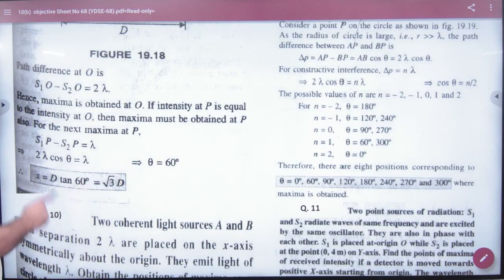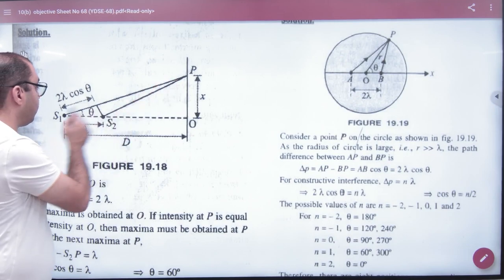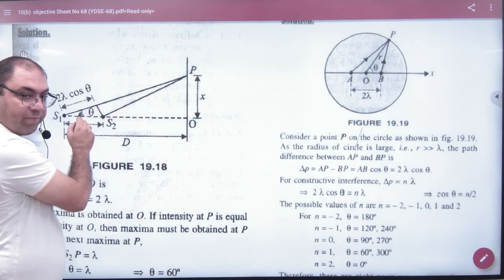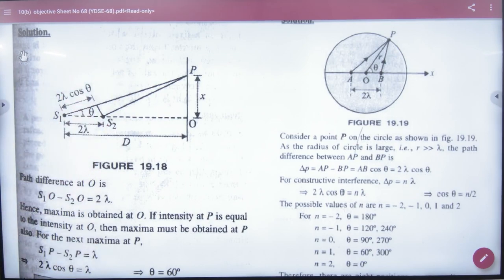x ki value can be calculated. x ki value calculate karenge is right angle triangle mein, tan θ is x upon D. x can be calculated. Answer.